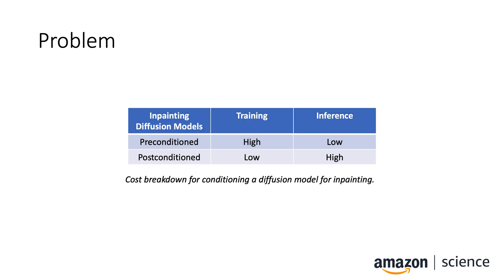Image inpainting using diffusion models is generally done in two ways. Pre-conditioning, that is fine-tuning for the inpainting task, or post-conditioning, that is repurposing unconditioned models for the inpainting task at inference time. The first is fast at inference time but extremely costly to train. The latter is slow during inference but does not require any training.